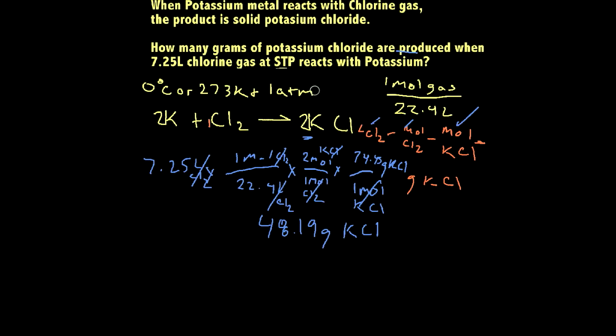Now, let's go back and look at our problem. It gives us three significant figures in our problem, so it's going to end up being 48.2 grams of potassium chloride as our final answer. Anyway, I hope that wasn't too confusing and that it helped. Thanks for watching.